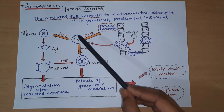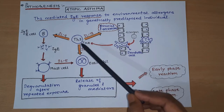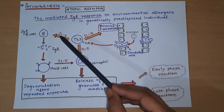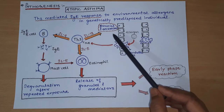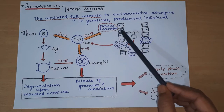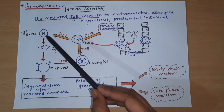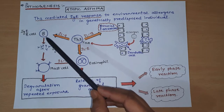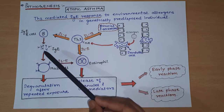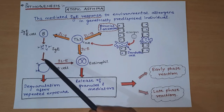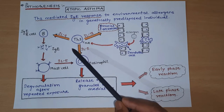When TH2 cells recognize the allergen, they release many inflammatory mediators such as interleukin-13, interleukin-4, and interleukin-5. IL-13 acts on goblet cells and increases mucous secretion. IL-4 stimulates IgE-type B cells, which convert to plasma cells and secrete IgE antibodies; these IgE antibodies ultimately stimulate mast cells.